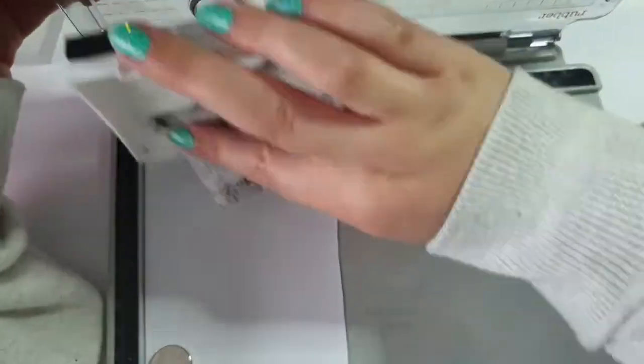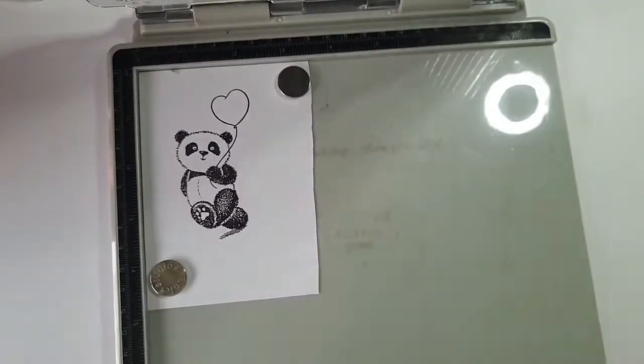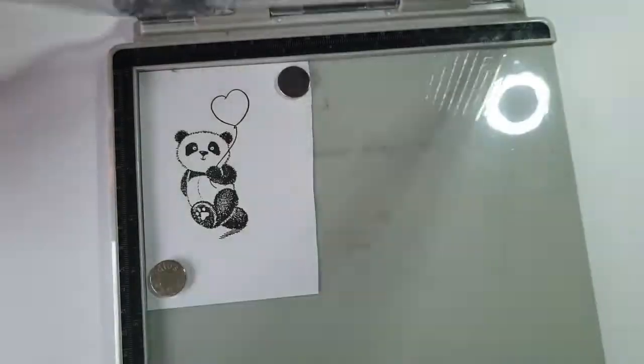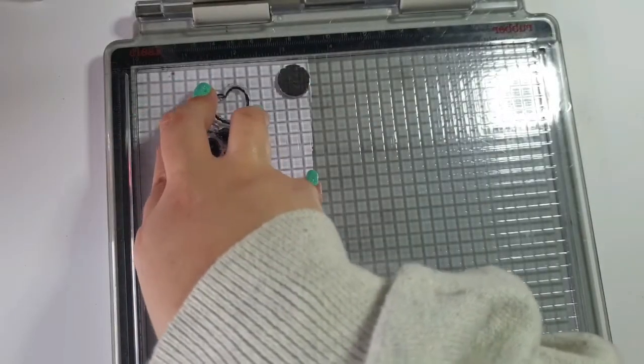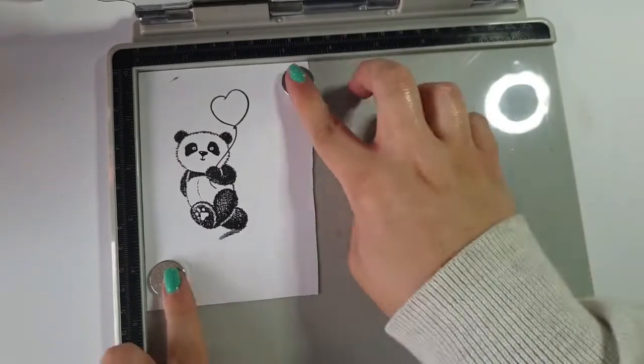I used my Tim Holtz stamping platform to stamp it with some Versafine ink. As always, I can never stamp it properly so I've had to do that more than once. I really liked this panda with the balloons. This is for my friend John.